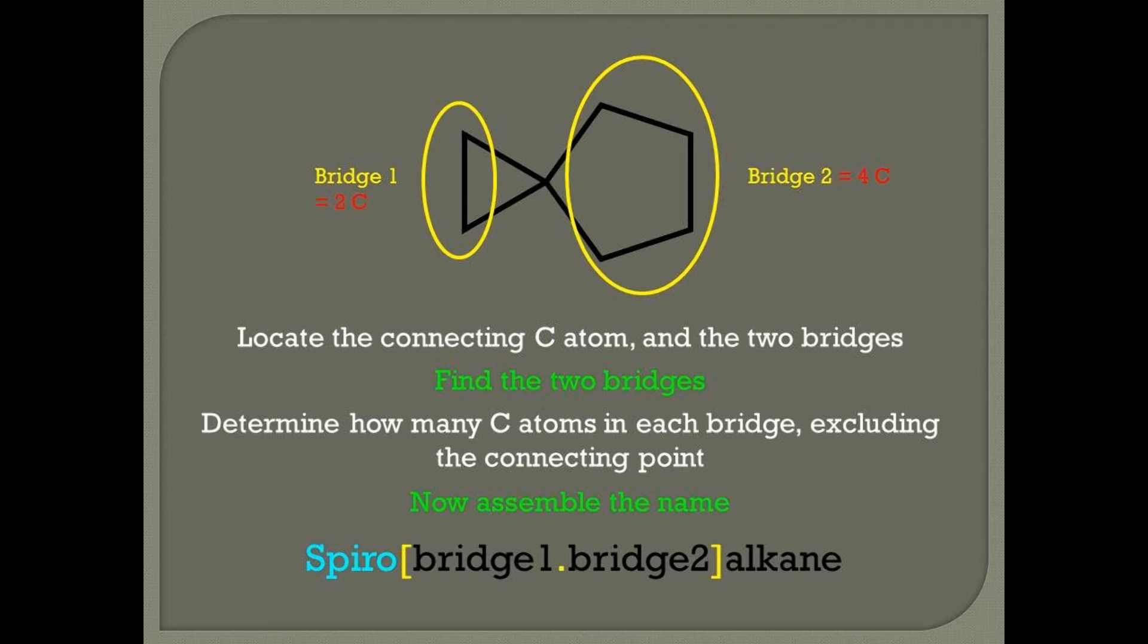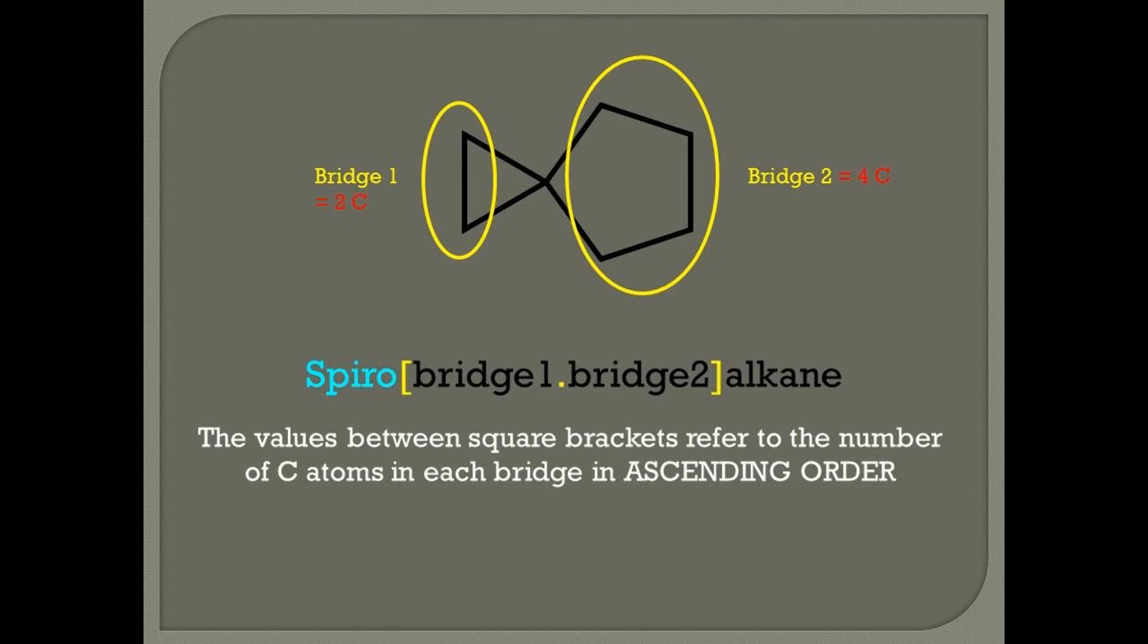Assemble the name following this template: spiro, open square bracket, bridge one dot bridge two, close square bracket, alkane. The values between the square brackets refer to the number of carbon atoms in each bridge in ascending order from smallest to biggest. If you remember correctly, for bicyclic compounds, there were three numbers within the square brackets in descending order from biggest to smallest. For spirocyclic, it's from smallest to largest, so it's ascending order, and it's only two numbers.